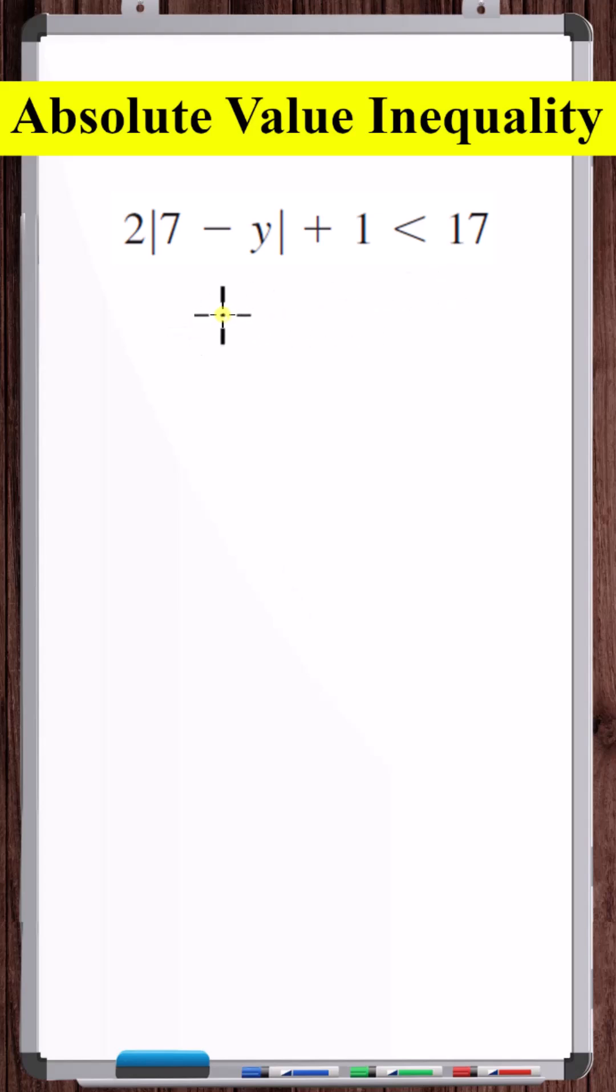Let's solve this absolute value inequality. What we want to do is isolate the absolute value on one side and constants on the other side of the inequality.